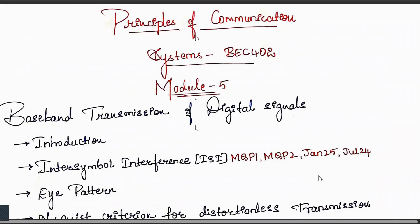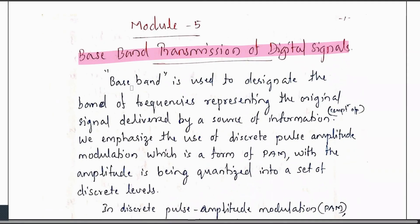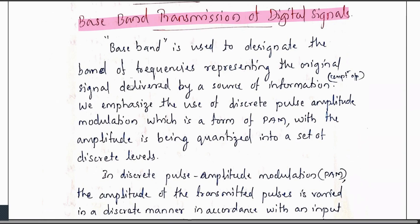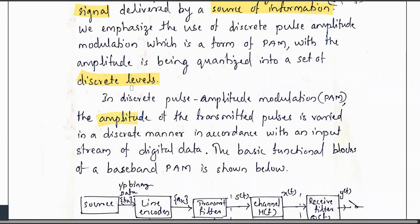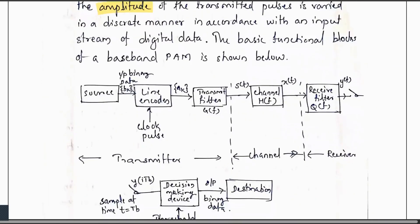Starting with baseband transmission of digital signals. Baseband is used to designate the band of frequencies representing the original signal delivered by a source of information. We emphasize the use of discrete PAM — pulse amplitude modulation — where the amplitude is quantized into a set of discrete levels. In discrete PAM, the amplitude of the transmitted pulses is varied in a discrete manner in accordance with an input stream of digital data. This is the functional block diagram of the baseband PAM system, which is also the answer you write for the ISI question.